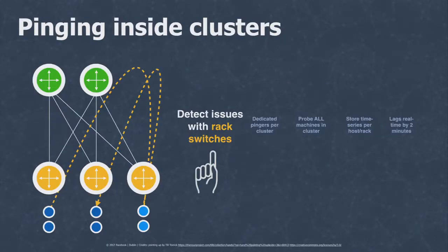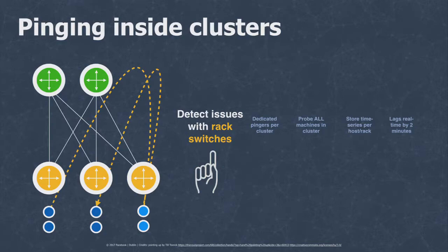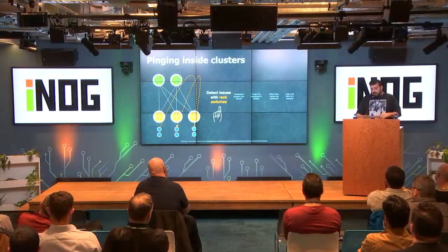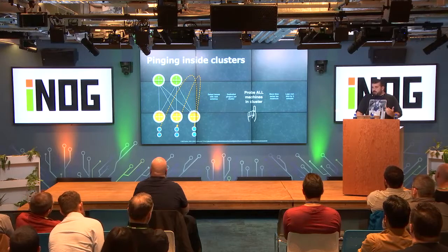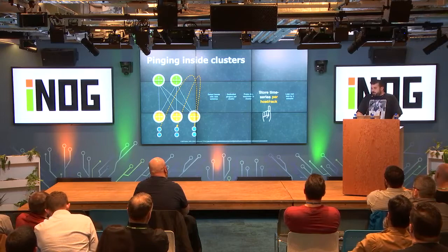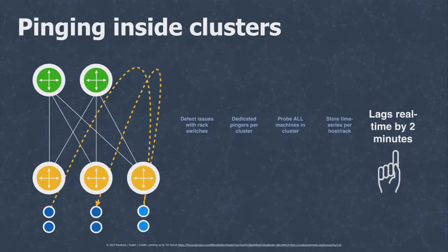Now that we have all this data, how do we start making sense of it? We decided our unit of loss was going to be clusters — essentially a grouping of top-of-rack switches. If you think of the yellow devices as top-of-rack switches and the green as some aggregation layer, that's what we typically call clusters. This gave us enough granularity to understand issues between top-of-rack switches. We have data pingers per cluster, hitting every single machine, and results get sent to a time series database. In production it lags by a couple of minutes, which is good enough.